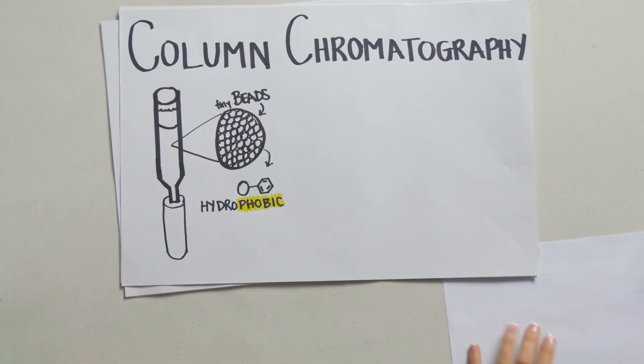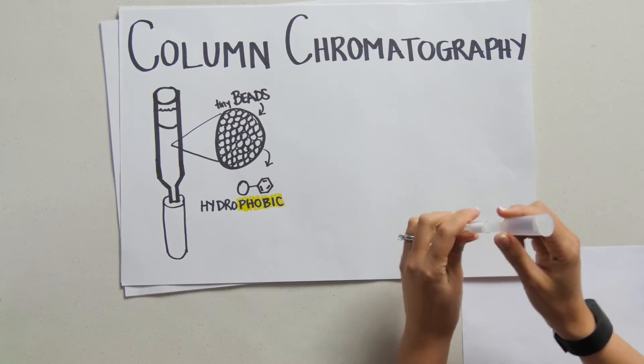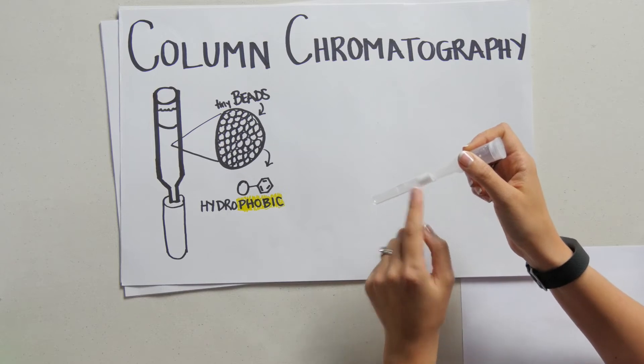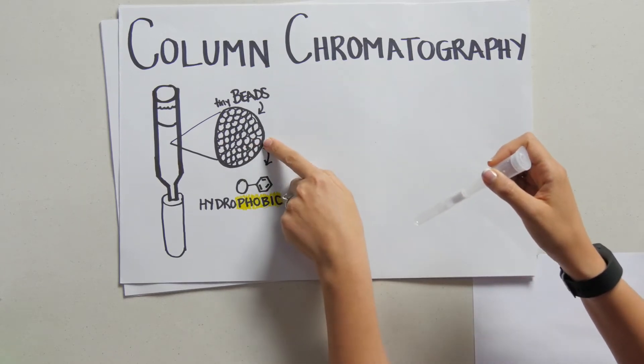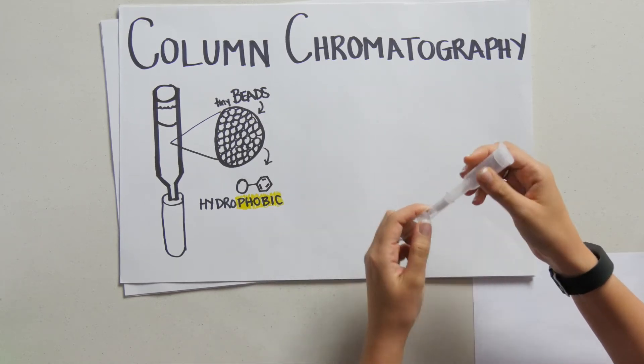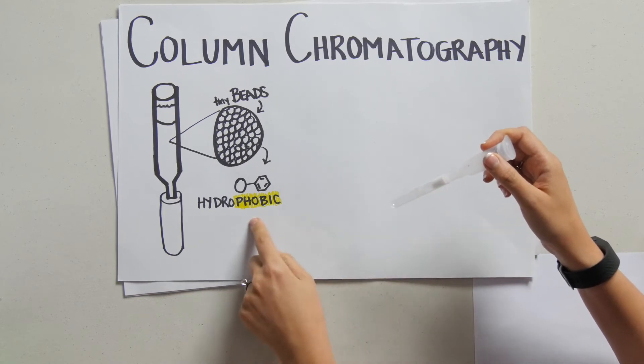And the way we're going to do that is by using column chromatography. So here's an example of our column. And you can see here this white stuff isn't just powder, it turns out it's a bunch of tiny little beads. And each of those beads has a phenyl group that makes it very hydrophobic. So they call this a hydrophobic interaction column because the properties of those beads are very hydrophobic.